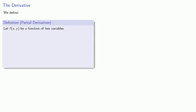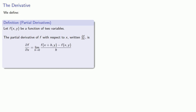We define the partial derivative as follows. Let f be a function of two variables. The partial derivative of f with respect to x, written this way, is going to be defined as a limit of a difference quotient, just like the definition of a regular derivative. Similarly, the partial derivative of f with respect to y is going to be the difference quotient, except this time y is going to be the variable that changes.